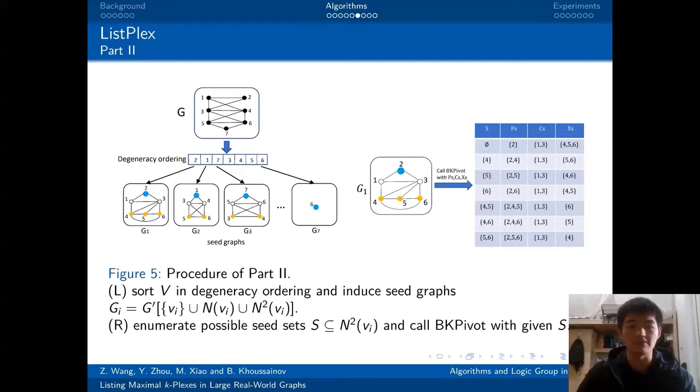Take the first iteration for example. In the first iteration, v_i is 2, v_i's 1-hop neighbors are 1 and 3 in the remaining graph, v_i's 2-hop neighbors are 4, 5, 6 in the remaining graph. After building the seed graphs, ListPlex will enumerate possible combinations of v_i's 2-hop neighbors.